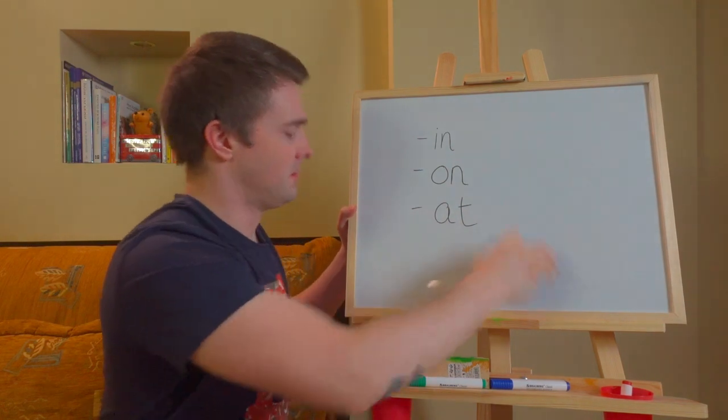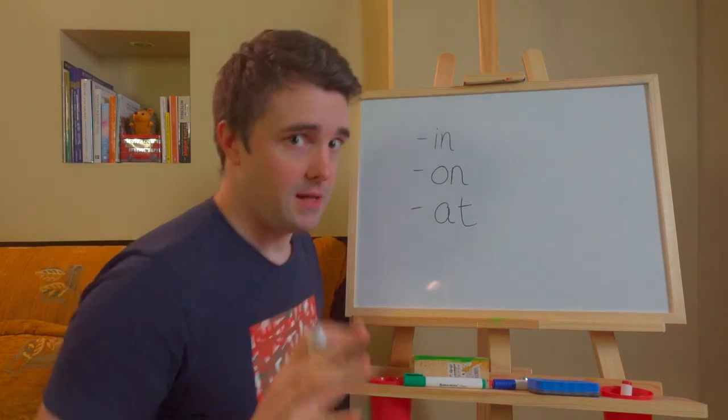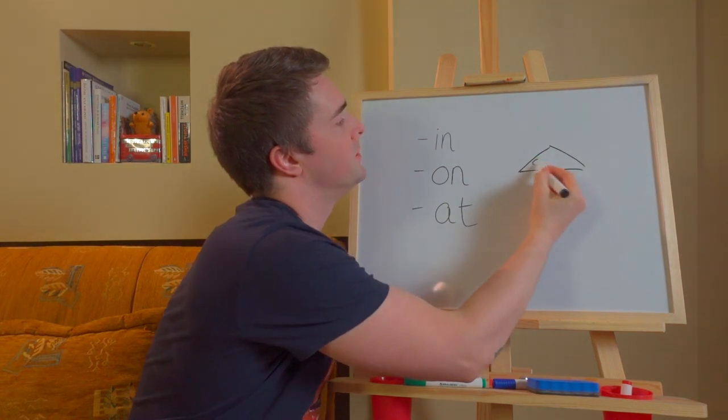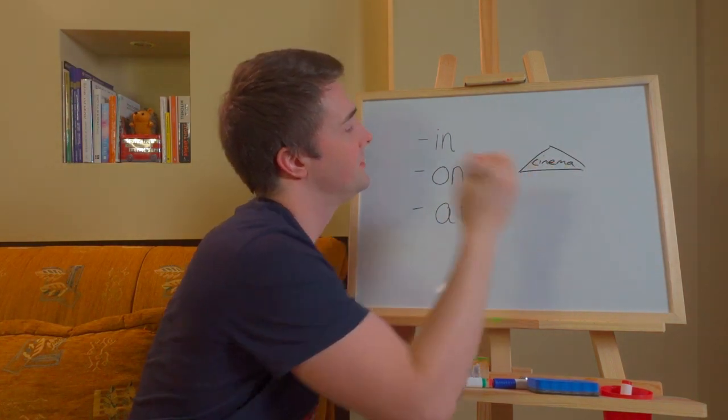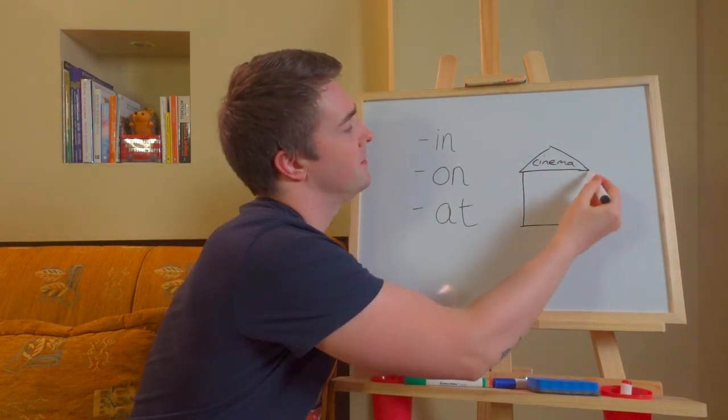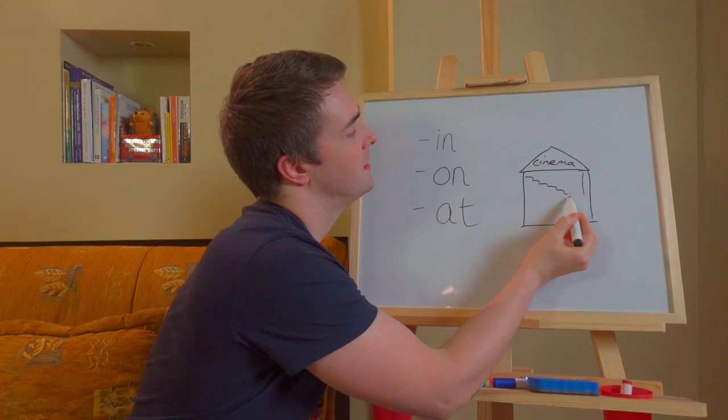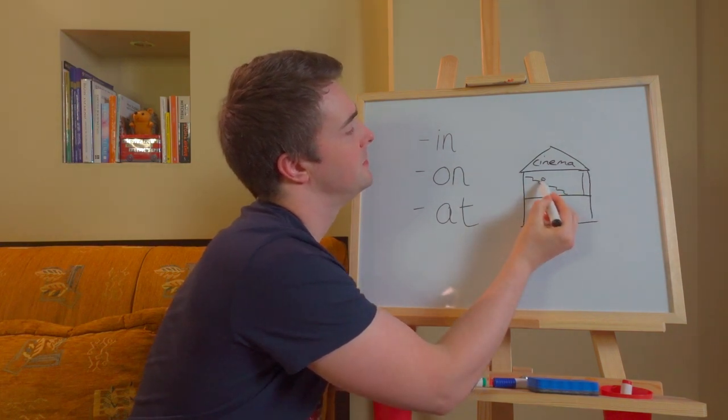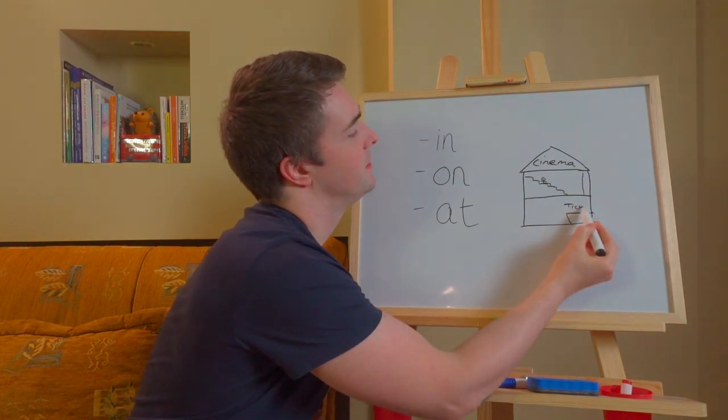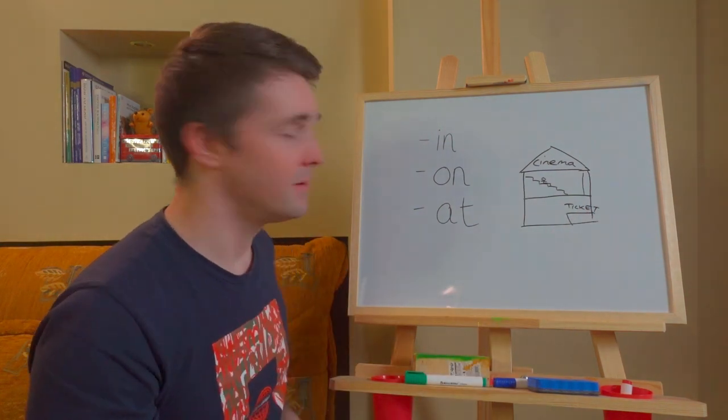And talk about buildings. So I'm going to draw a cinema. Here's a cinema. It looks like a house, but imagine it's a cinema. There's the screen with the seats, showing little people sitting there. And there's the ticket booth. This is going to get quite deep into this in, on, at grammar.